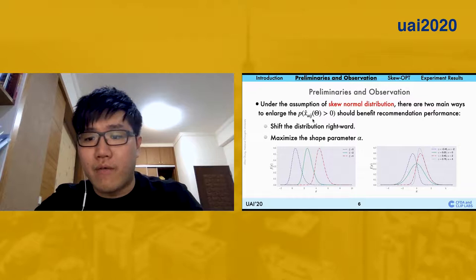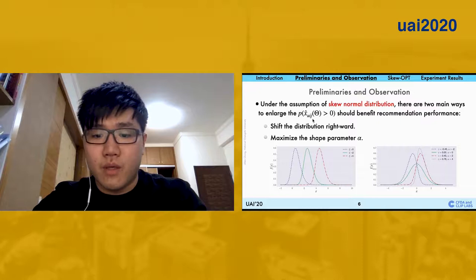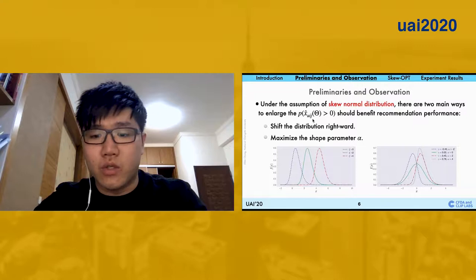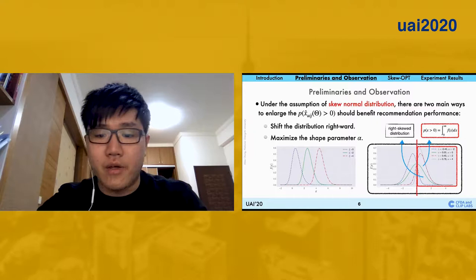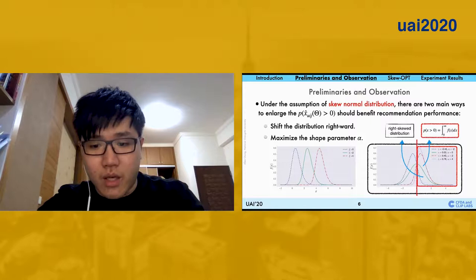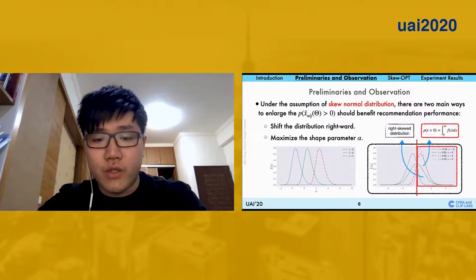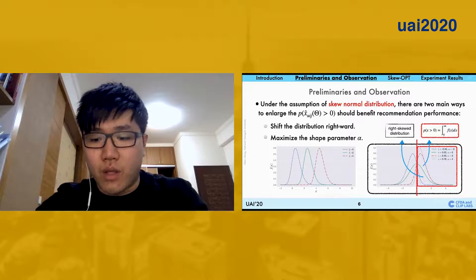However, the overshifting problems will cause overfitting problems. The second one is to enlarge the shape parameter alpha of the skew-normal distributions. As you can see at the right-hand side of the pictures, alpha is positively proportional to skewness values, which we say gamma here. With a greater skewness value, we can see the probabilities of X_UIJ being larger. Therefore, a greater shape parameter alpha will lead to large probabilities of X_UIJ.